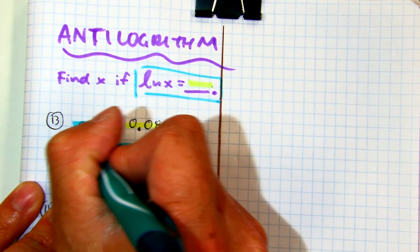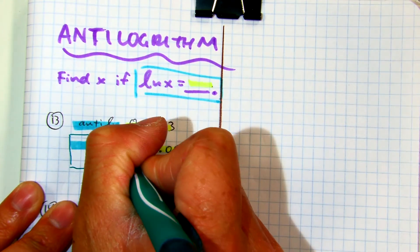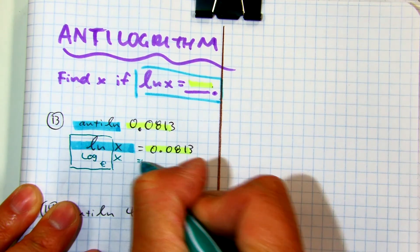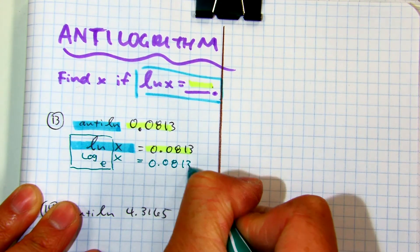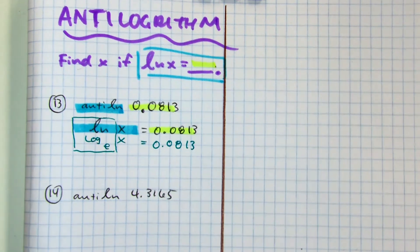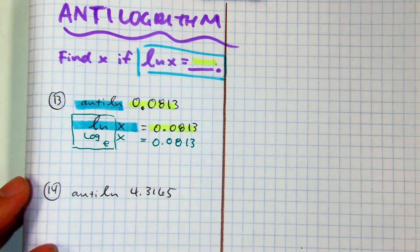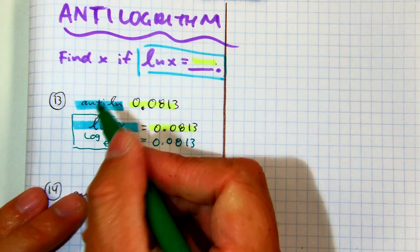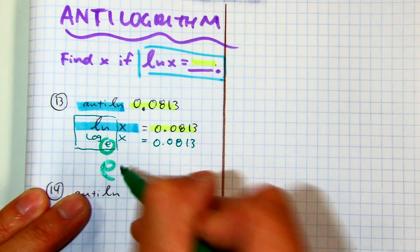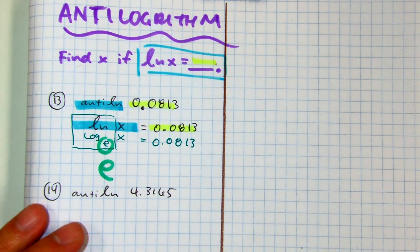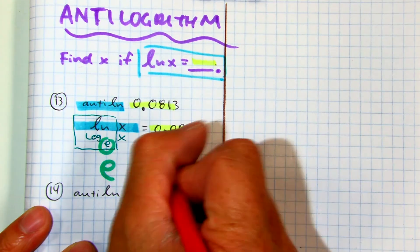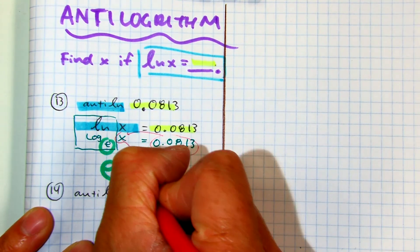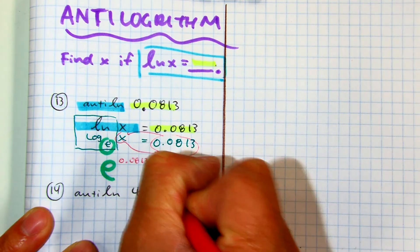Let's do this by hand. Class, what does this turn into? Log base e of x equals 0.0813. Class, what form are we in here? Exponential or log? Let's turn this into exponential. There's my base. Class, what do I do with these two? Switch them. So now I have e^0.0813 equals x.